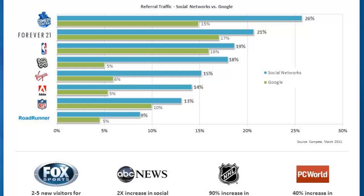And this is a chart here. This blue bar is for these various sites' referral traffic from Facebook. And the green bar is traditional traffic from Google — traditional SEO traffic. The fact that many of these sites get more traffic from Facebook than Google was a pretty big deal. So this was the first big piece of the equation.